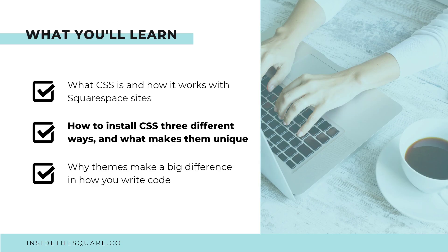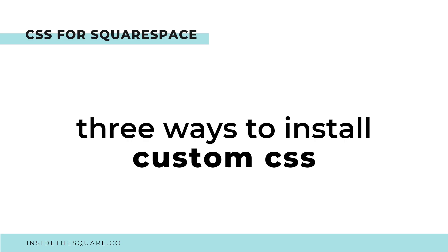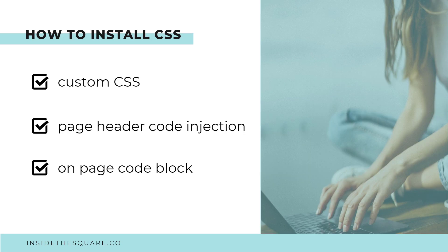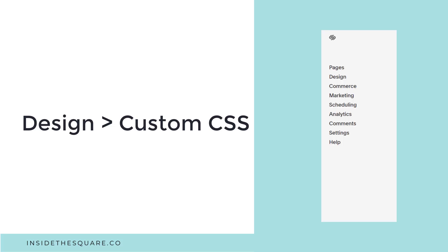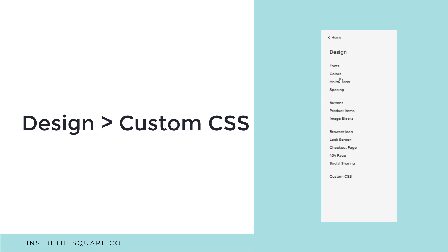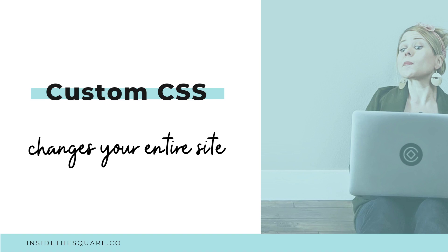Now let's talk about how you can install CSS on a Squarespace website and what makes each of the three methods unique. The first and most common is the main custom CSS section of your design menu. You can find it by navigating to Design, then scrolling all the way down to Custom CSS at the very bottom. This applies a change to your entire Squarespace website — every single page. So if you change a button hover color there, it will apply to every button on every page.